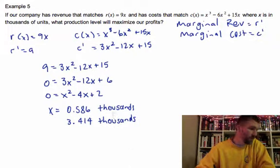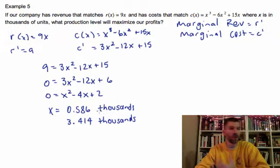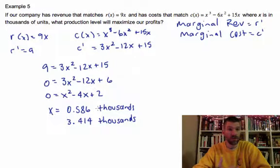And this is how many units I would need to create in order to maximize my profit. So that's a really interesting way to look at maximizing profits for your company. If you have a revenue equation and a cost equation, you can take the derivative of both of those things and set them equal to each other. And wherever your zeros are, that's where your max profit occurs. Pretty cool.